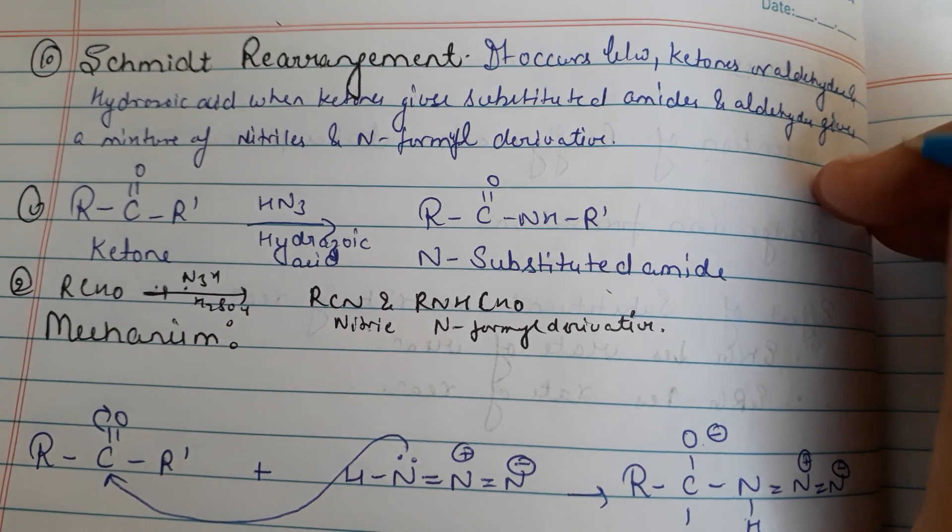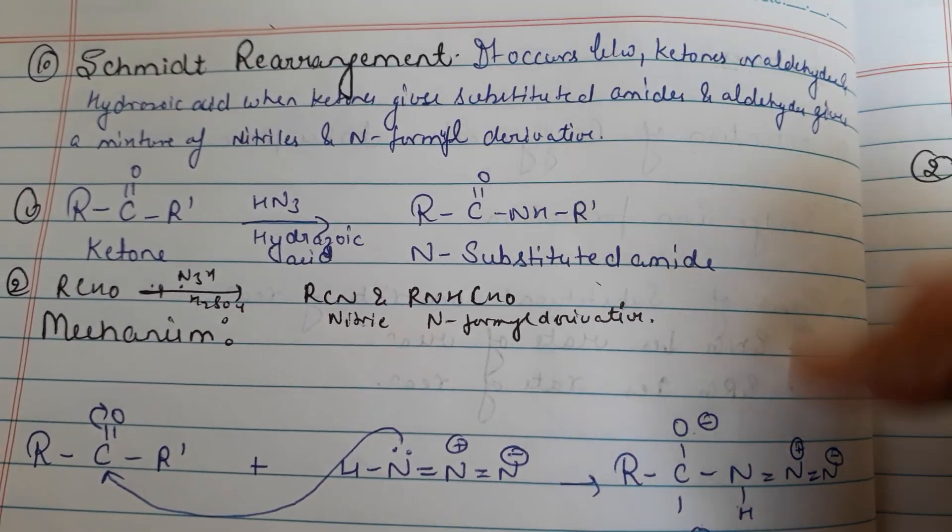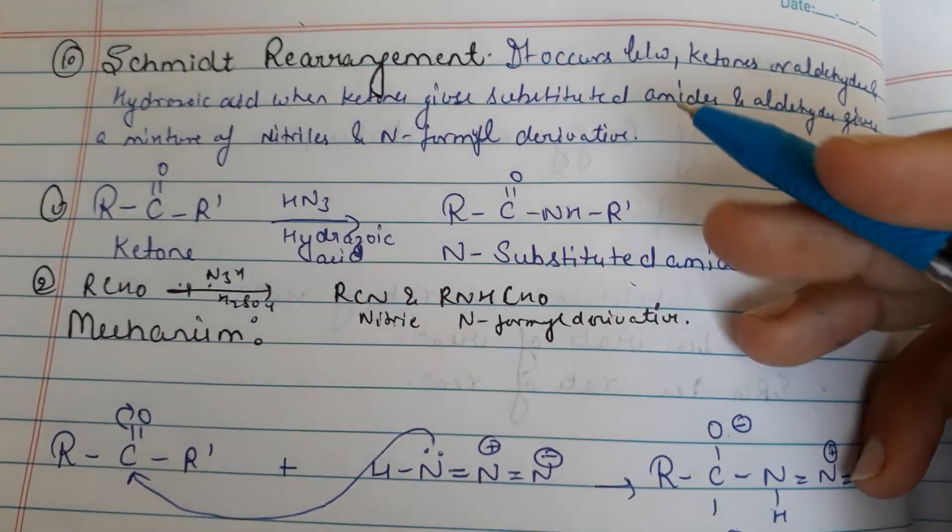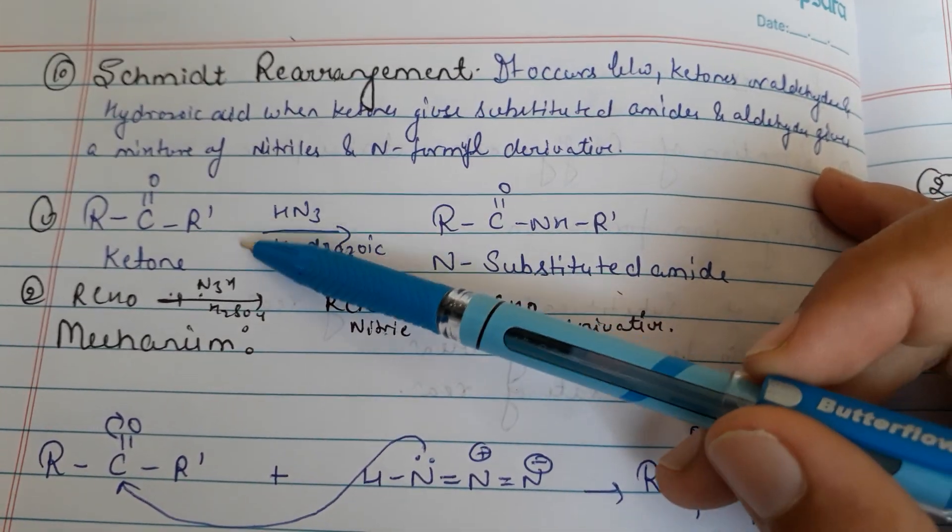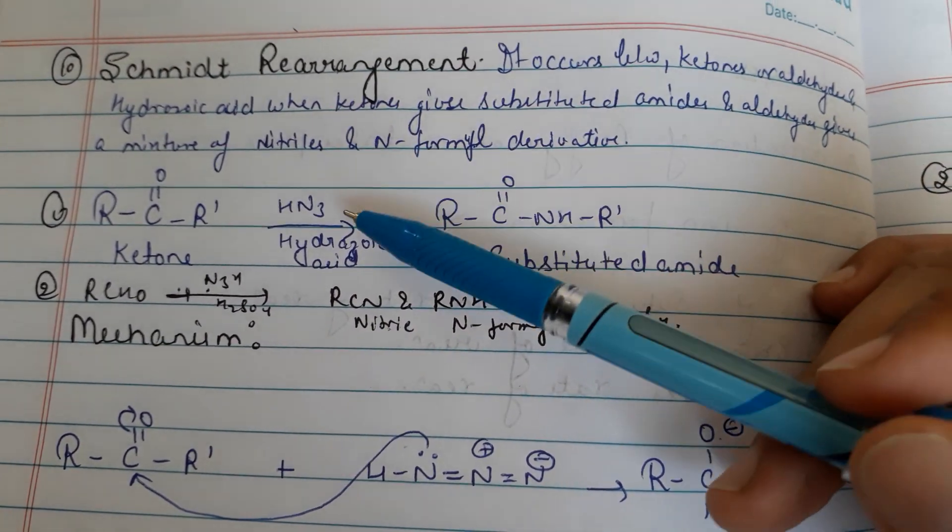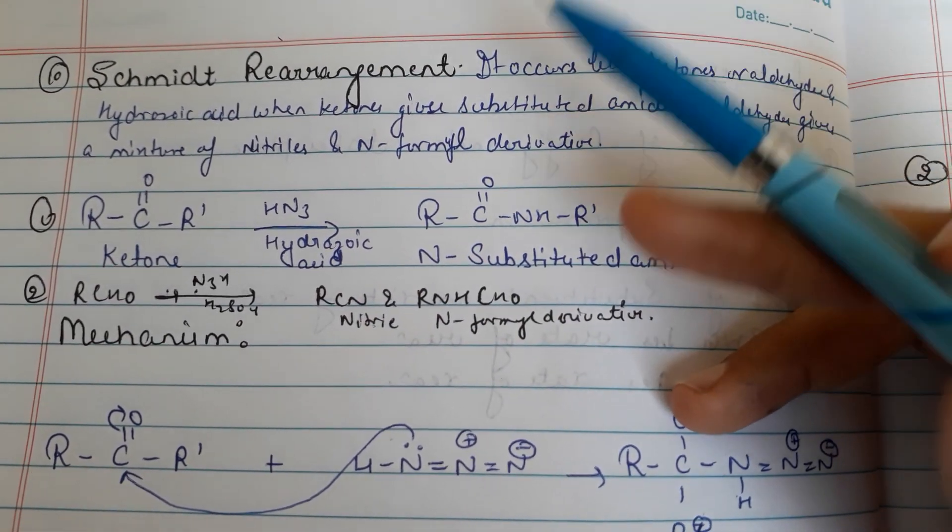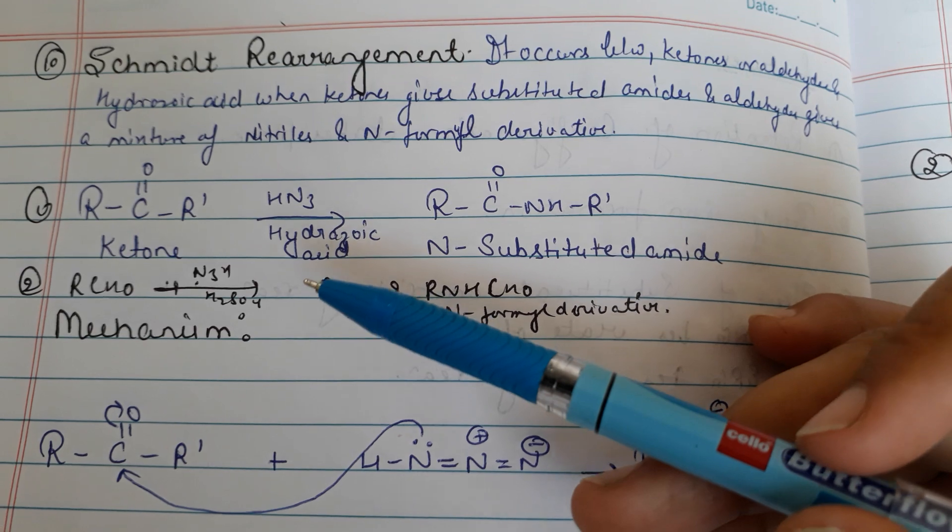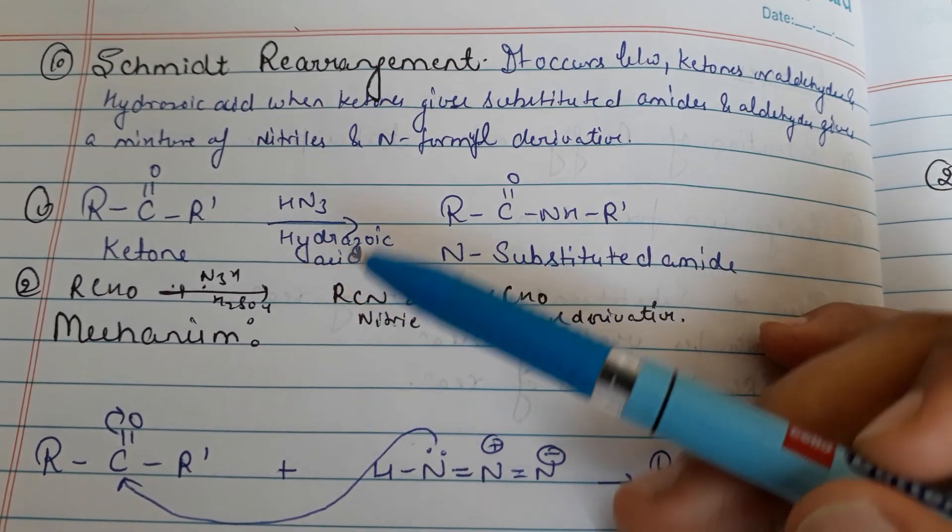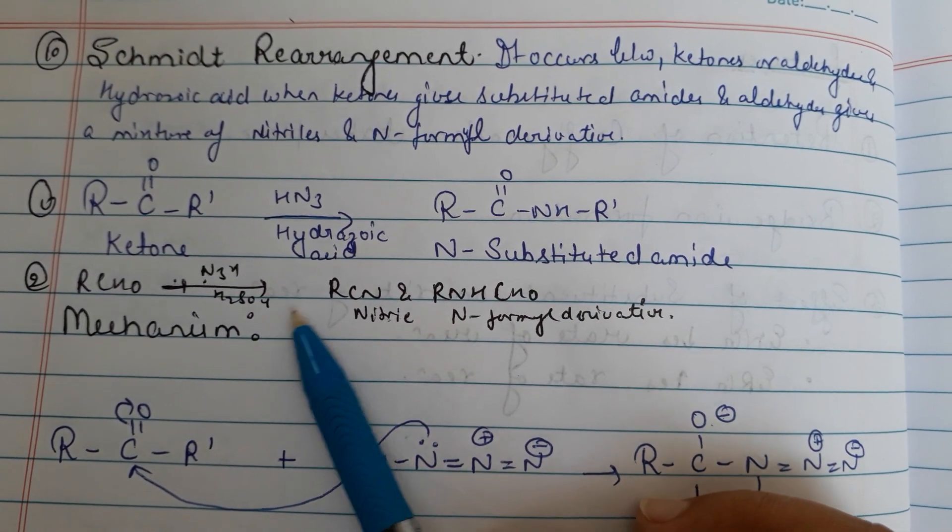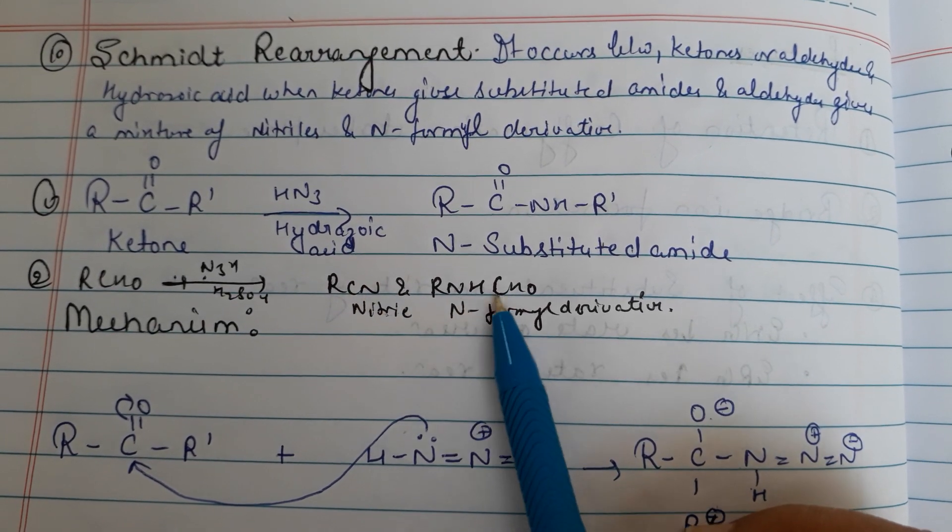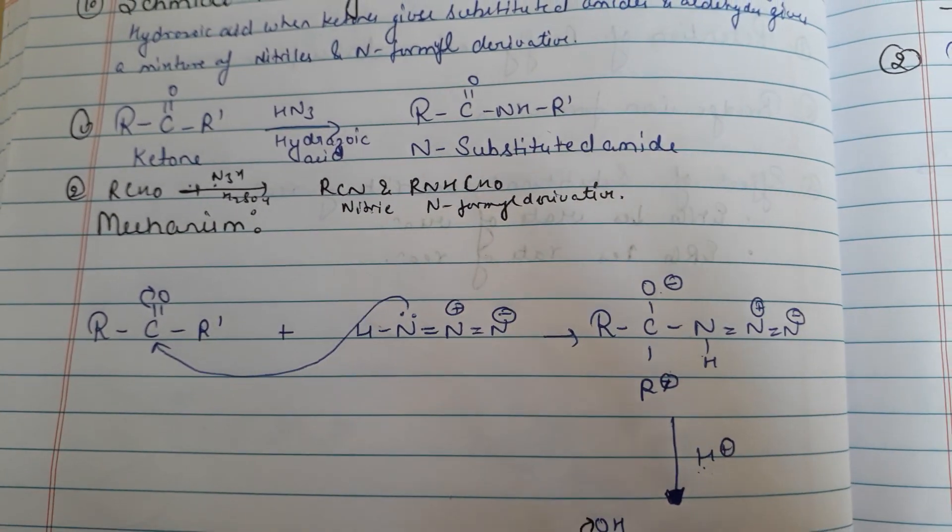American Pharmacy Chemistry. Today's rearrangement is Schmidt rearrangement. It converts ketone to N-substituted amide in presence of HN3 hydrazoic acid and H2SO4. Acidic condition should be there. Like that RCHO and HN3 with H2SO4 will give RCN and RNHCHO and formyl derivative mechanism.